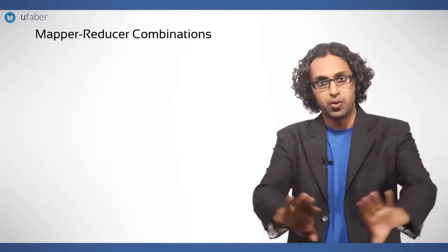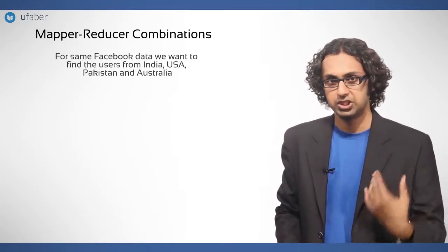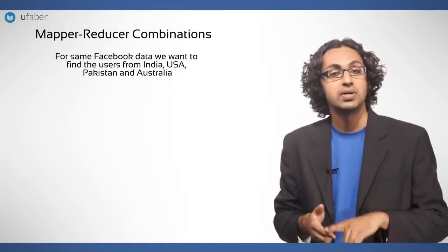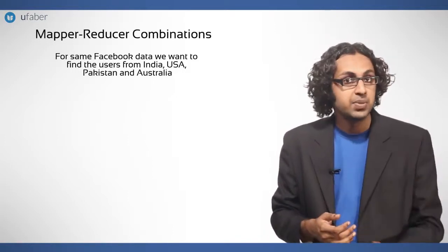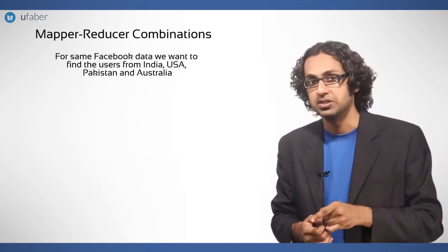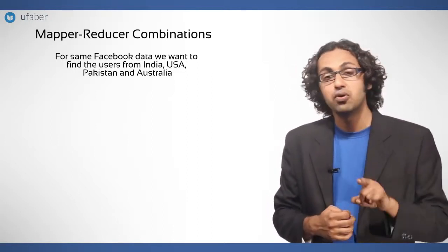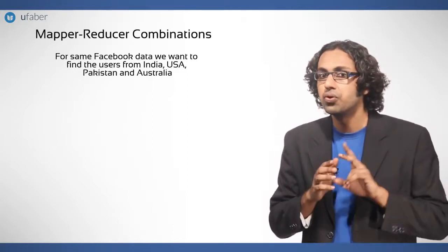Now let us look at a broader example. For some Facebook data, we want to find the users from India, USA, Pakistan and Australia. Now again, multiple mappers will work to filter the users. Individual reducer is needed for each country. So there will be four reducers.